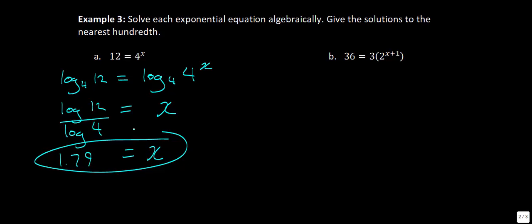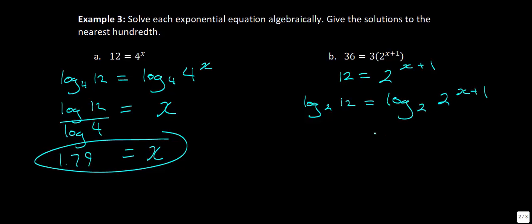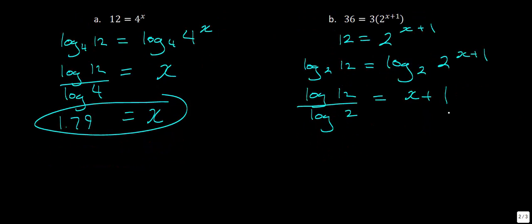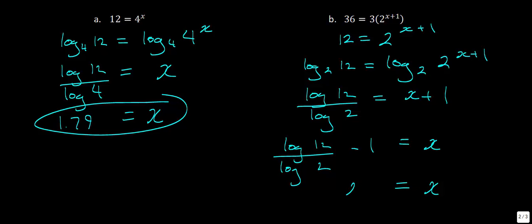For part b, there's a 3 being multiplied, so first divide both sides by 3 to get 12 equals 2 to the power of x plus 1. Taking log base 2 of each side: log base 2 of 12 equals x plus 1. Using change of base, that's log 12 divided by log 2 equals x plus 1. Subtracting 1 from both sides, x equals log 12 over log 2 minus 1, which rounds to approximately 2.58.